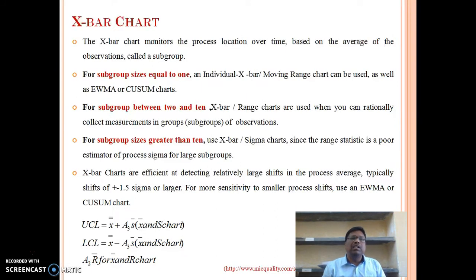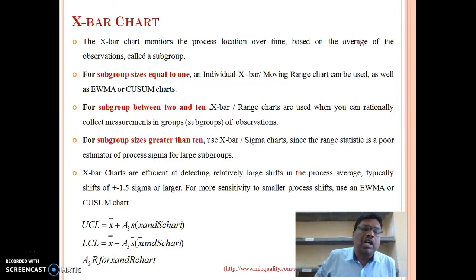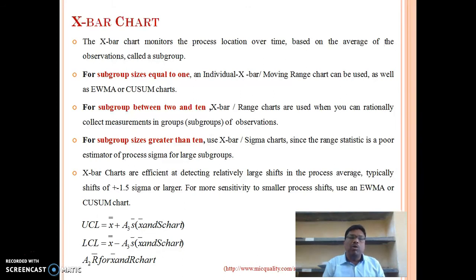In the x-bar chart, when the subgroup size equals 1, both x-bar and range chart or moving range chart can be used, as well as the EWMA or CUSUM chart. For subgroups of size 2 to 10, x-bar and range charts are used when you can rationally collect measurements in groups. For subgroup size greater than 10, x-bar and sigma charts are used, since the range statistic is a poor estimator of process sigma for large subgroups. X-bar charts are efficient at detecting relatively large shifts in the process average, typically shifts of plus or minus 1.5 sigma or more; for sensitivity to smaller shifts, use the EWMA or CUSUM chart.